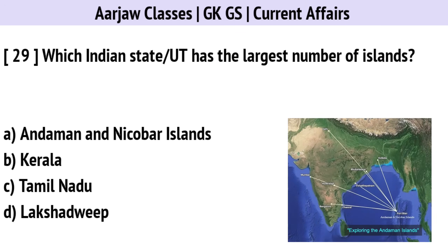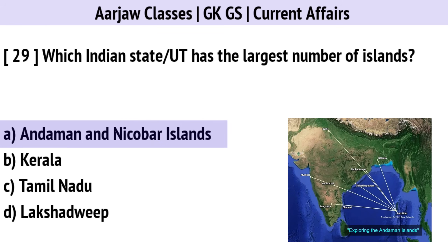Which Indian state or union territory has the largest number of islands? Correct option is A — Andaman and Nicobar Islands.